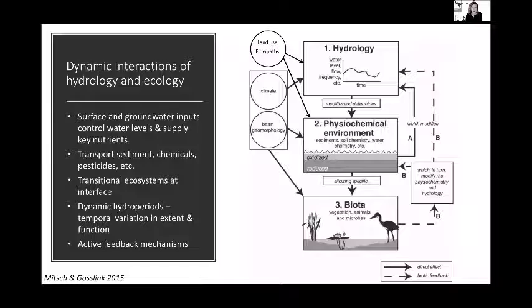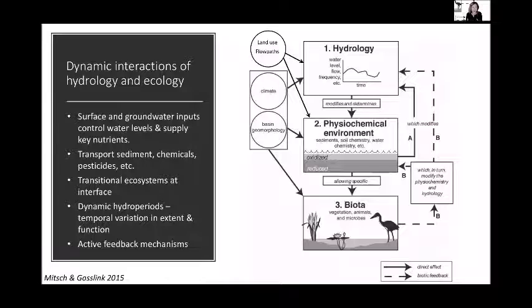I added this flow path component here because land use really does drive hydrology — it affects timing, extents, things like that. This surface-groundwater connection is really critical for not only controlling these water levels, but also supplying things like sediment, key nutrients, and potential transport of other agronomic chemicals. So as we focus the discussions today around wetland environments, thinking about those transport mechanisms is an important piece of that story.